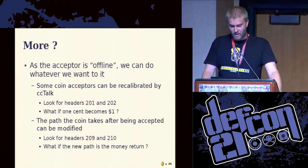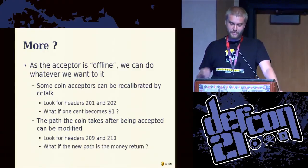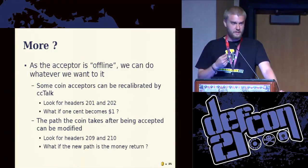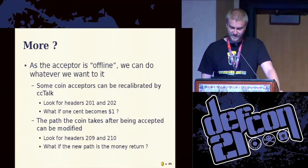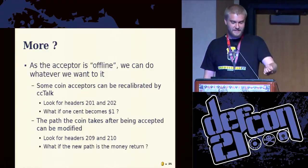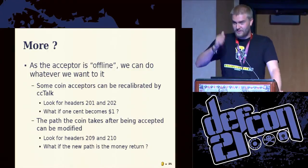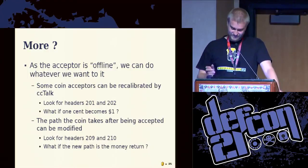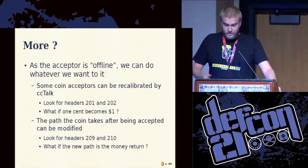There are many possibilities. And again, there is absolutely nothing — no authentication, nothing. You just have to be connected on the bus. You also have several paths for the money. Like when the coin is not accepted, normally it will give it back to you — so you can try several times before dropping the coin. And you can change that — just invert the two: when the coin is not recognized, it will go into the machine, and if the coin is accepted, it will give it back to you. So as soon as you win, you just play again. That's great.